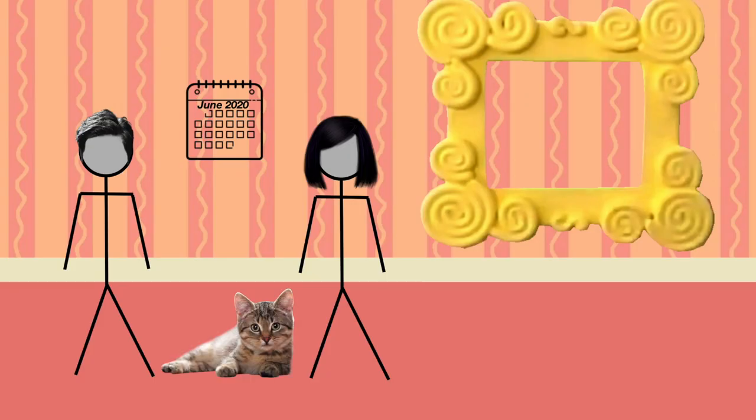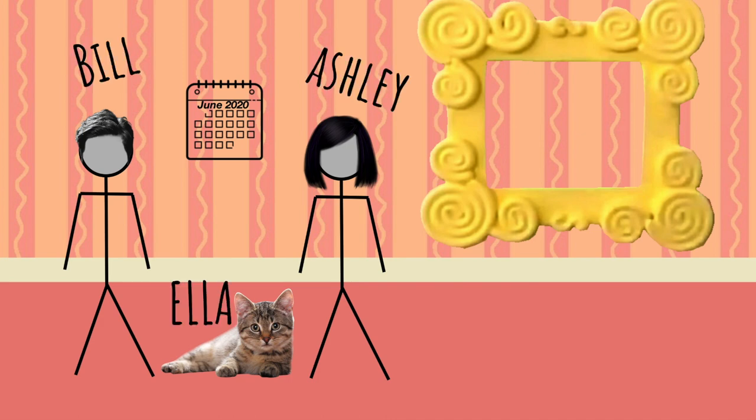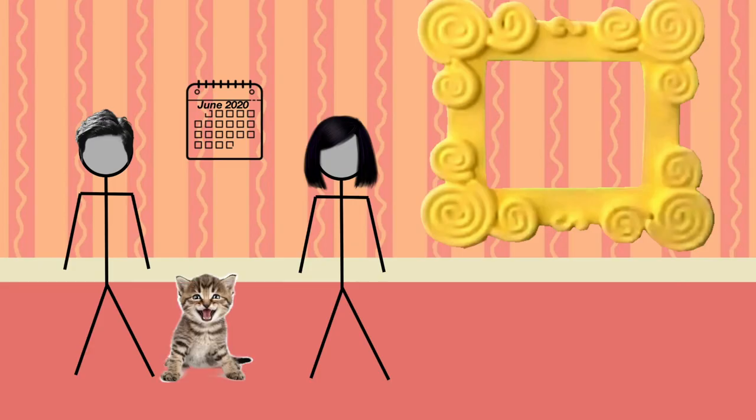Okay, so we have two siblings, Ashley and Bill, and they have a super cute cat named Ella. Now they're stuck at home on summer vacation because there's a global pandemic happening or something. So Ella meows all the time.